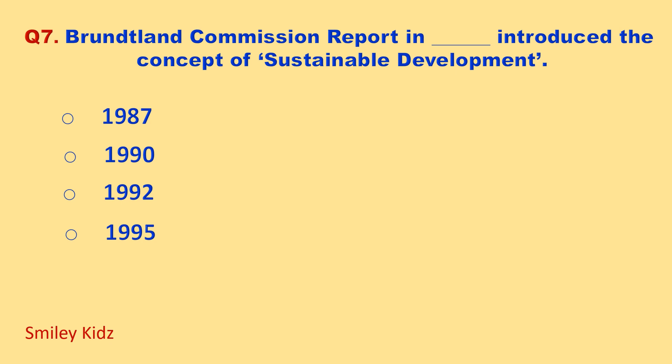Brundtland Commission report in which year introduced the concept of sustainable development? Your options are: 1987, 1990, 1992, 1995. Your time starts now.